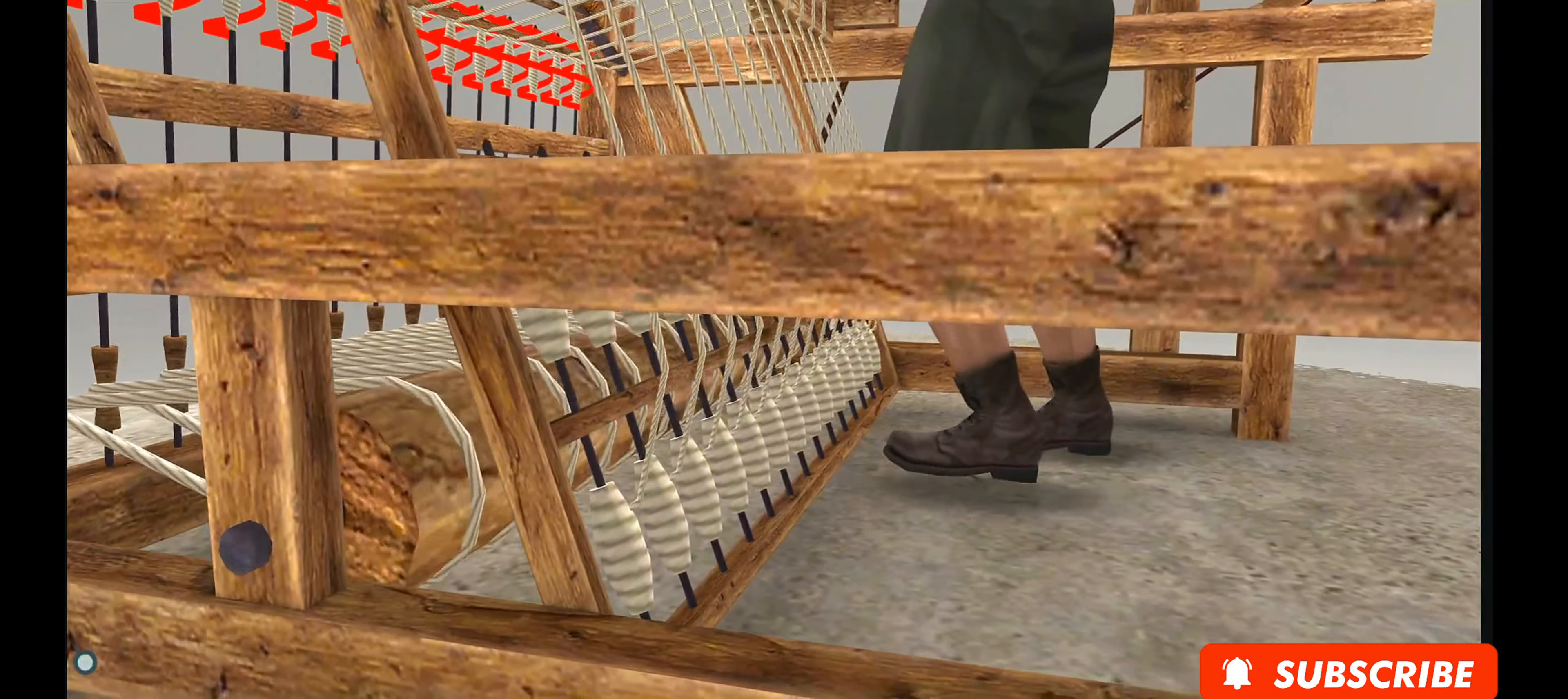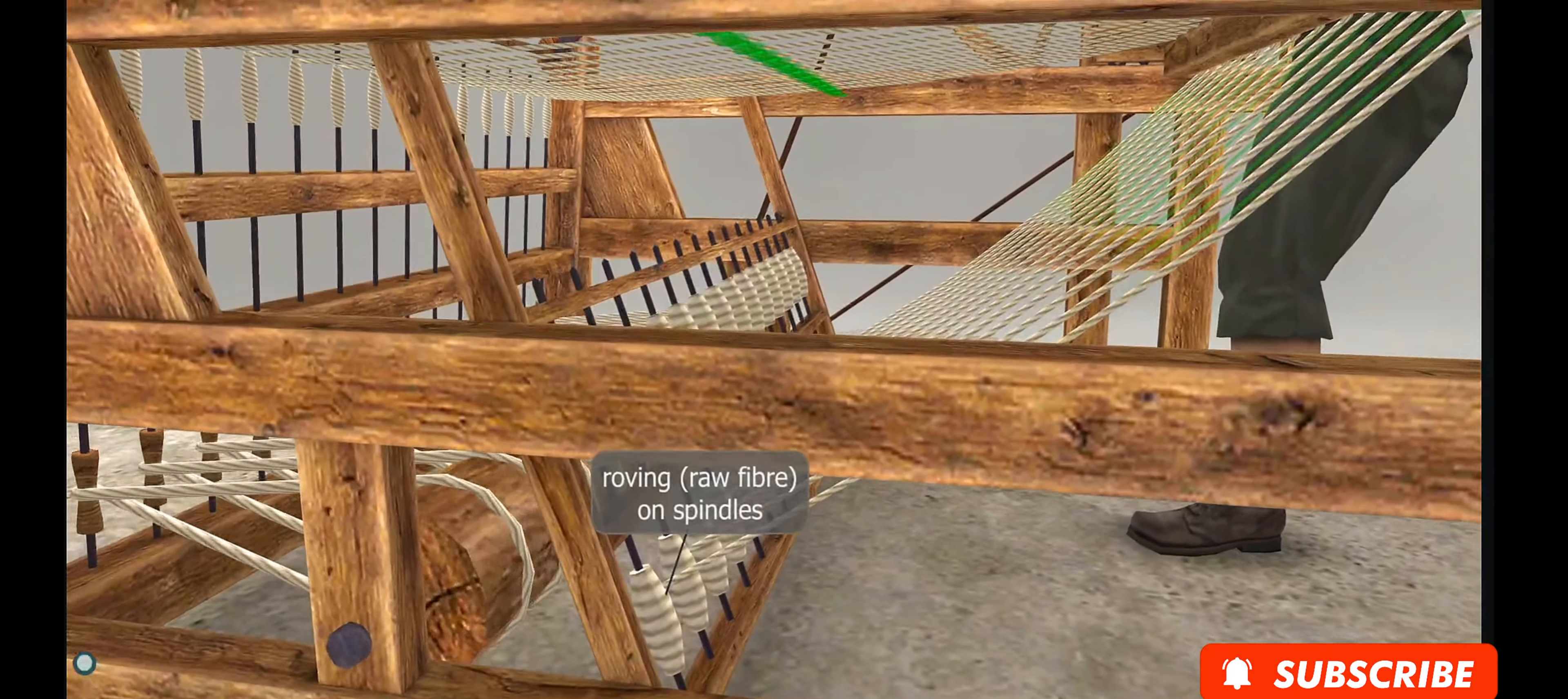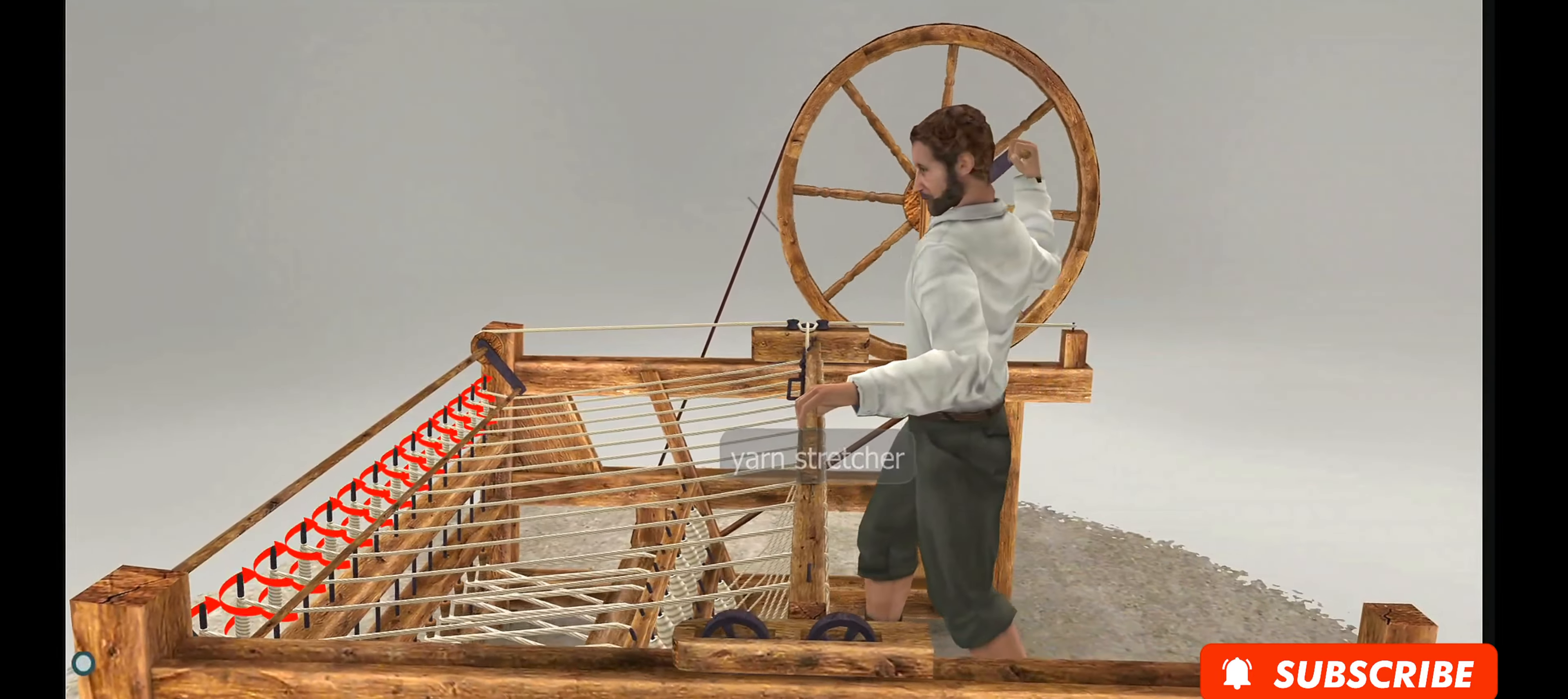James Hargreaves developed a solution for the problem in 1764, which became known as the spinning jenny. The device spins raw fiber into yarn, ready for weaving.